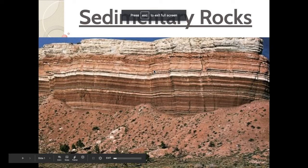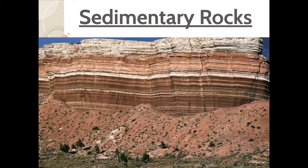Hey y'all, it's Ms. Summers with your notes today on sedimentary rocks. We are three days into this unit. The first day we talked about the rock cycle and a quick refresher on the three types of rocks — sedimentary, igneous, and metamorphic. Yesterday we looked at igneous and metamorphic in more detail, comparing extrusive versus intrusive igneous and foliated versus non-foliated metamorphic. So today we're looking at the last rock type in detail: sedimentary rock. What you should take away from these notes are the steps needed to make a sedimentary rock and the three main types of sedimentary rock and how they differ.